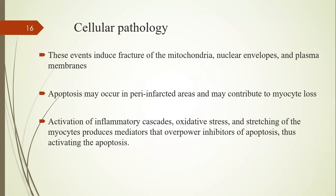These events induce fracture of the mitochondria, nuclear envelope, and plasma membrane, and apoptosis may occur, contributing to myocyte loss. Activation of the inflammatory cascade, oxidative stress, and stretching of myocytes due to elevated end-diastolic pressure produce mediators that overpower the inhibitors of apoptosis, thereby activating apoptosis.